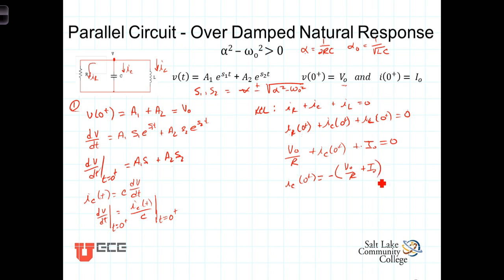With that value, we can determine our derivative. Evaluating at t = 0⁺ gives us our second equation: A1·S1 + A2·S2 = i_C(0⁺)/C, where i_C(0⁺) can be determined from the initial conditions.